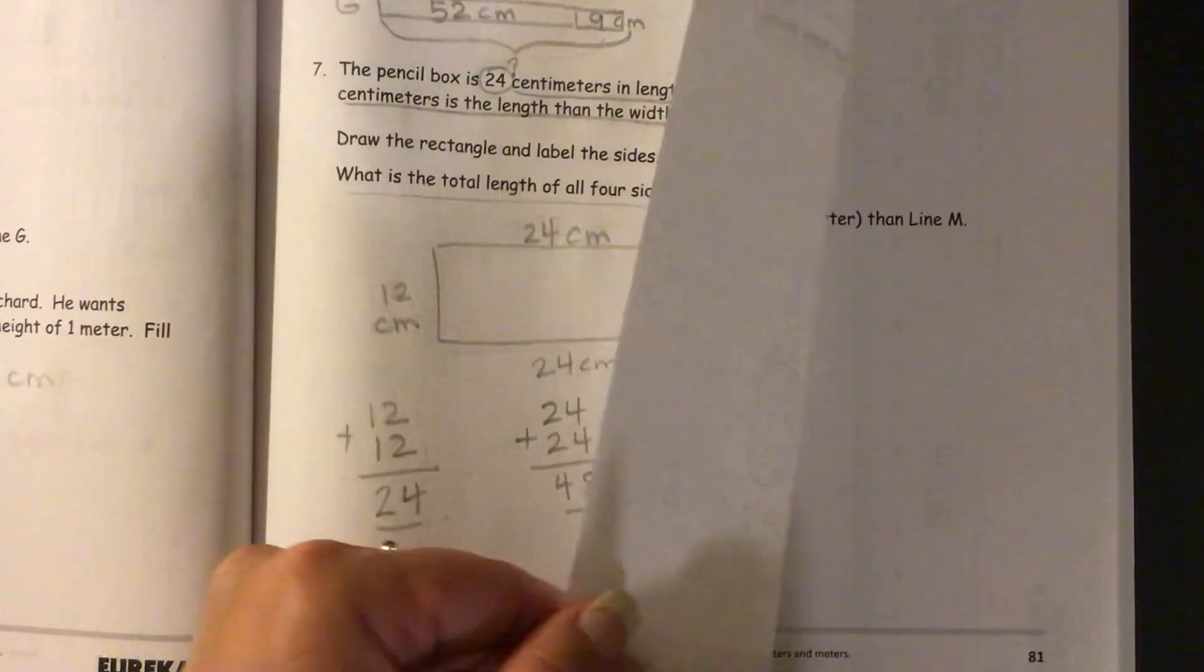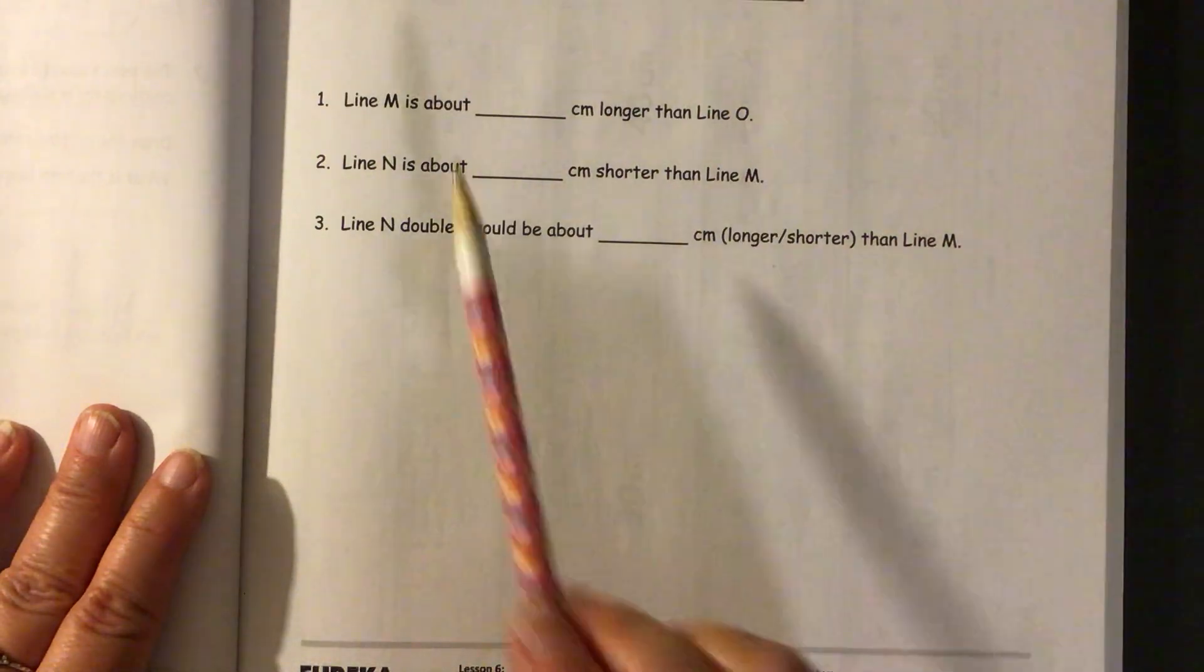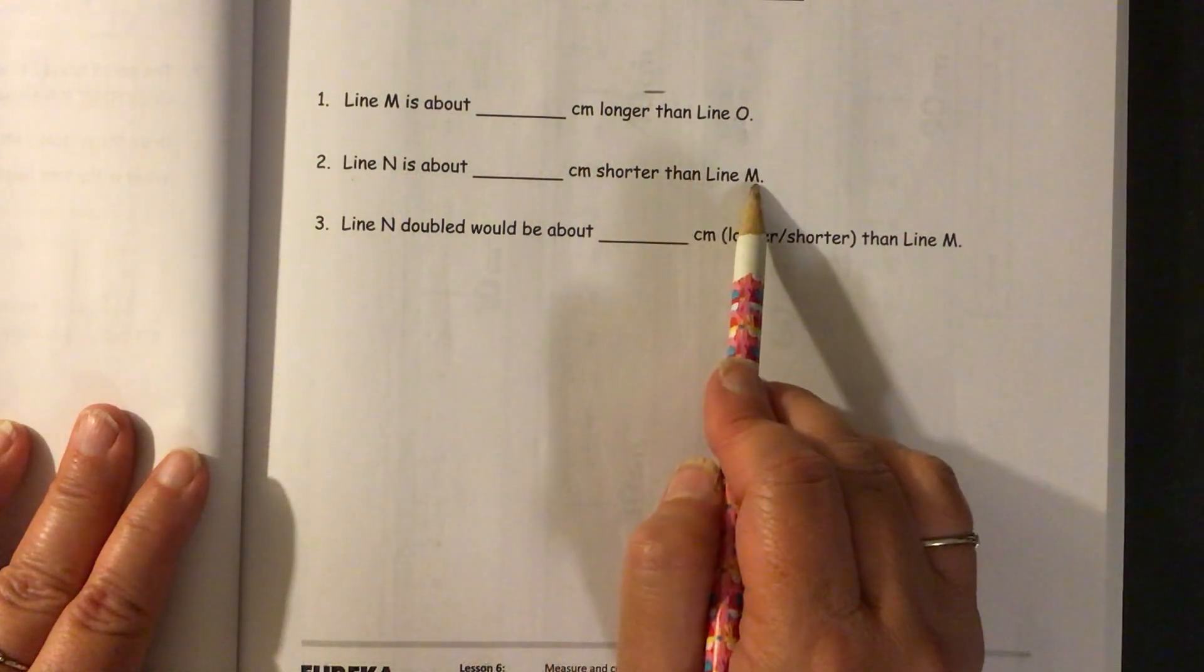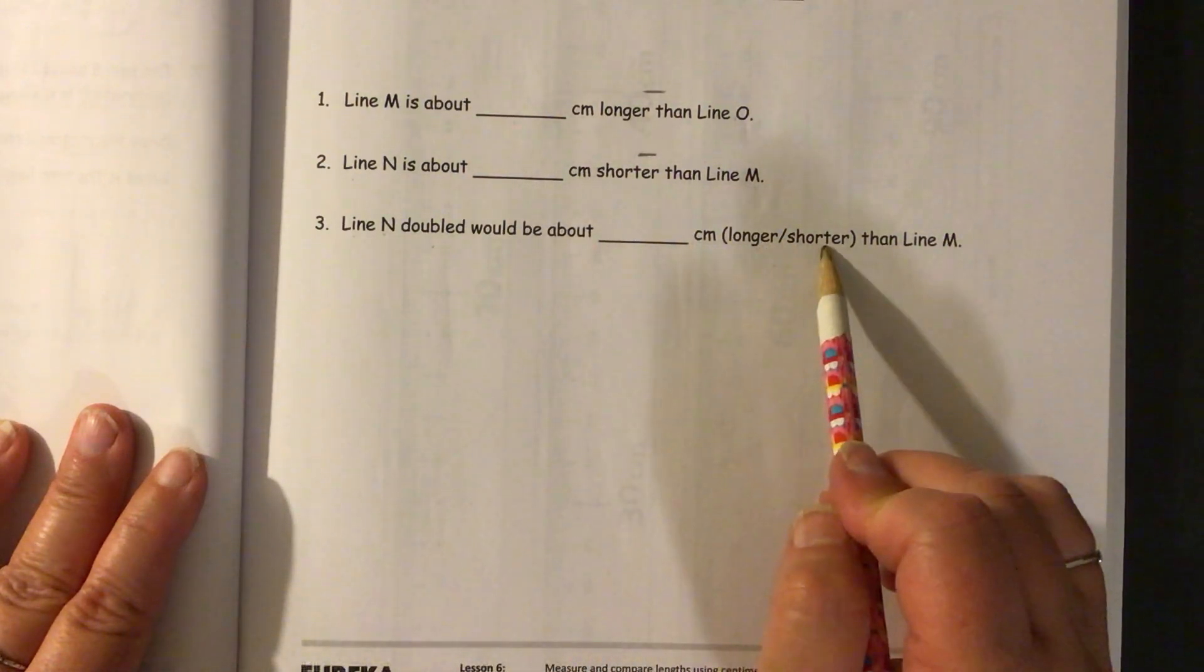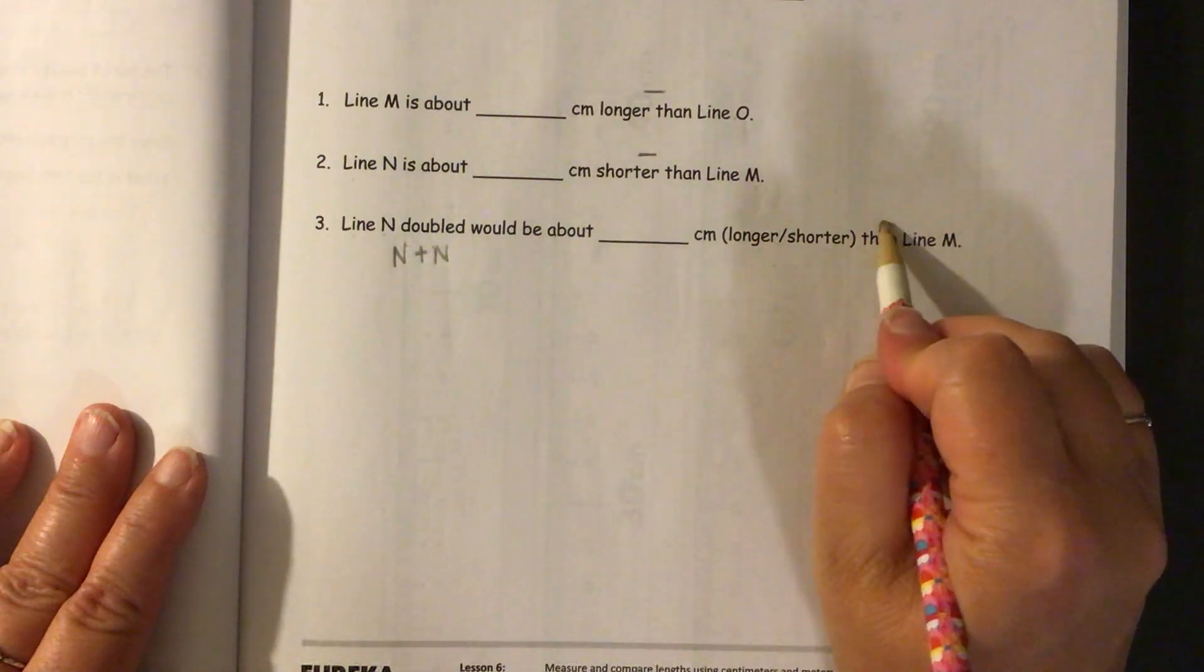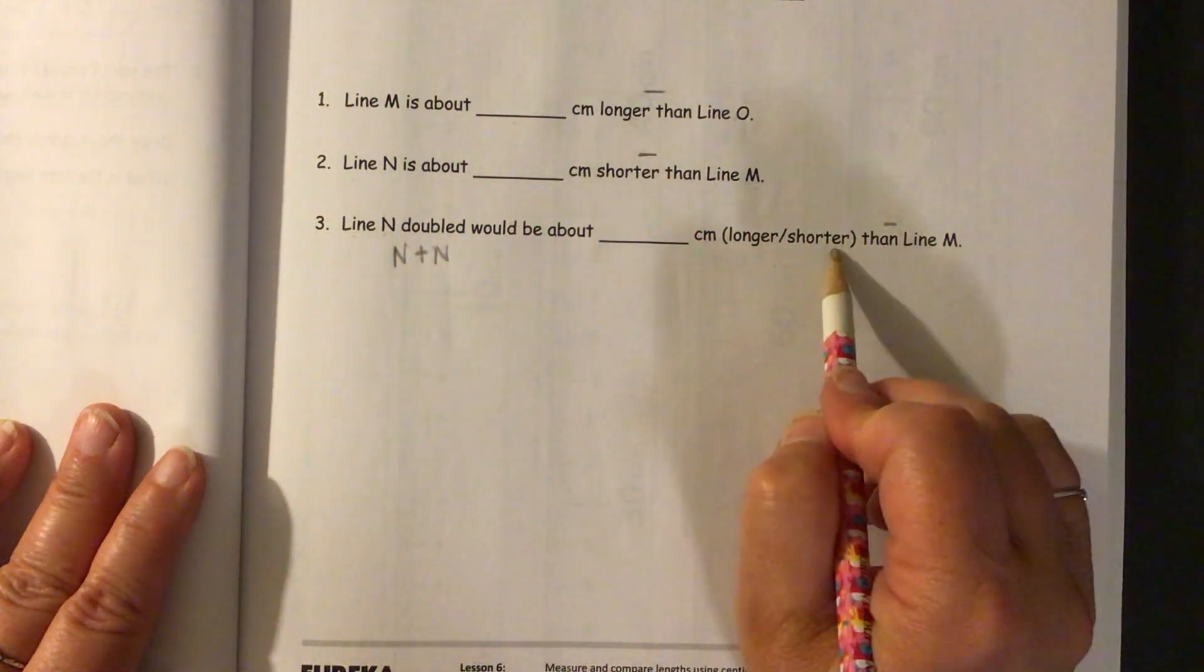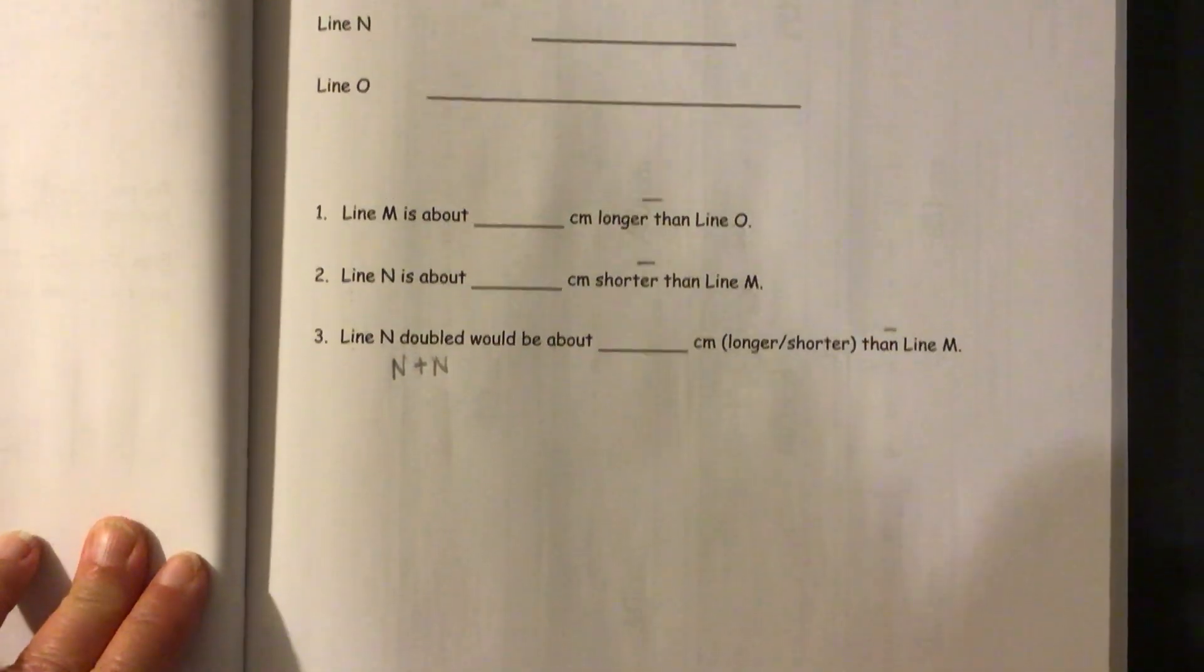So on your exit ticket, you will need to measure the length of each line. And it says line M is about blank centimeters longer than line O. We're comparing, so we have to subtract. Line N is about blank centimeters shorter than line M. Comparing, you have to subtract. Line N doubled would be about blank centimeters either longer or shorter than line M. So remember, doubled, you're going to have to add N plus N. And then subtract from line M to find out the difference, which you write here. And then circle if line N is longer or shorter than line M if it's doubled. So I hope that was helpful for you.